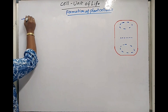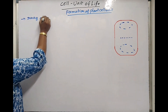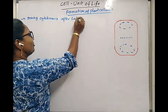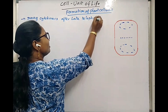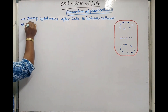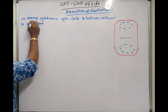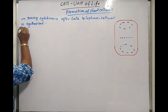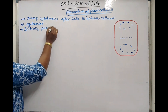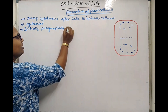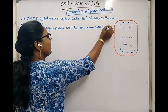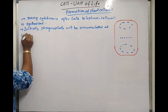We will write some of the points. During cytokinesis, after late telophase, cell wall is synthesized. Initially, phragmoplasts will be accumulated at the central part of the parent cell.